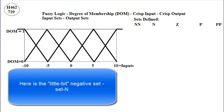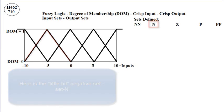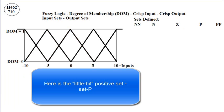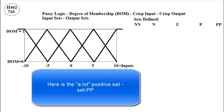Here is the little bit negative set, set N. Here is the nearly zero set, set Z. Here is the little bit positive set, set P. And here is the lot positive set, set PP.